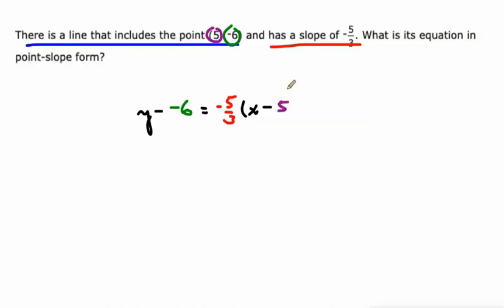Alright, anything that we can clean up here? Sure, we have this double negative over here. Let's make that y plus 6 instead of minus negative 6, equals negative 5/3 times x minus 5. There's our equation in point-slope form.